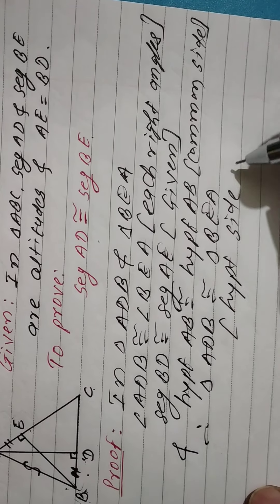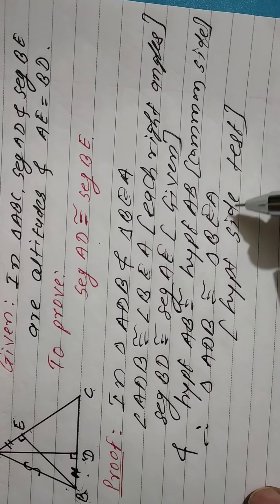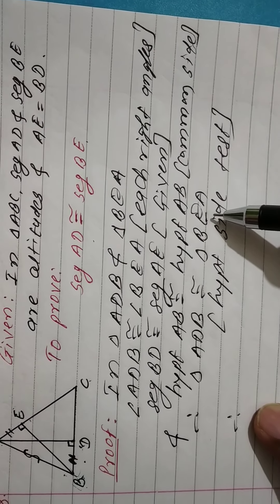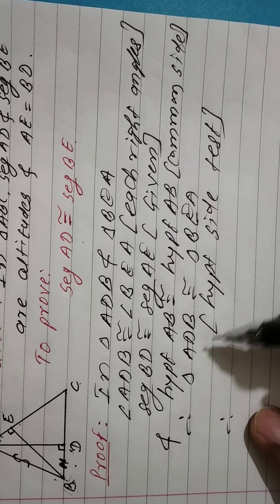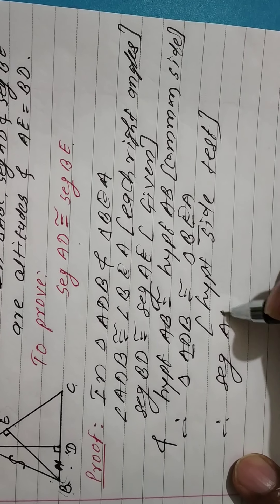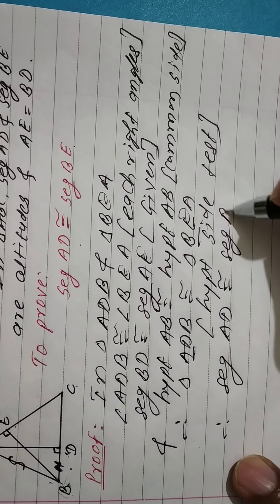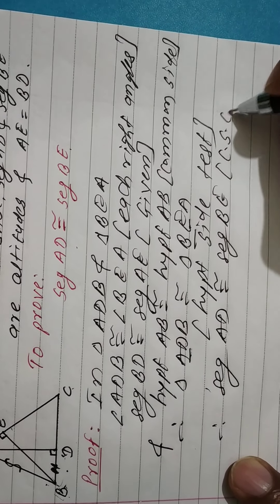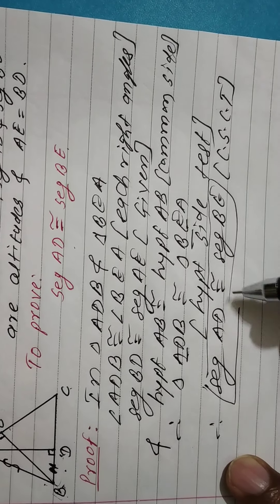By the hypotenuse-side test, these two triangles are congruent. Therefore, their remaining corresponding elements are also congruent. Segment AD is congruent to segment BE — corresponding sides of congruent triangles. Hence, it is proved. Thank you.